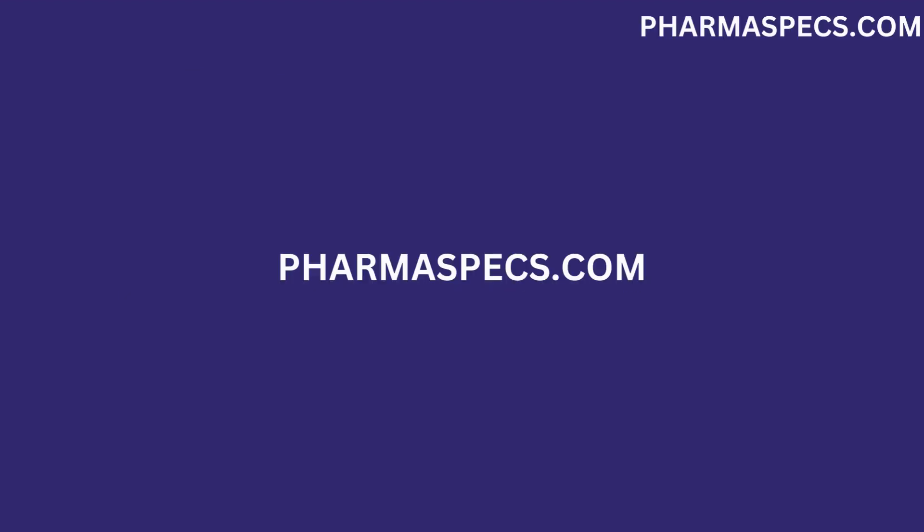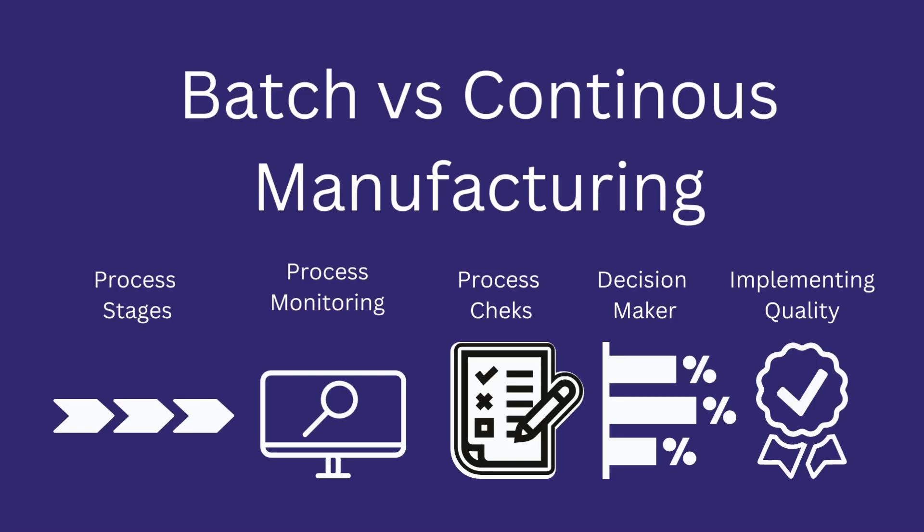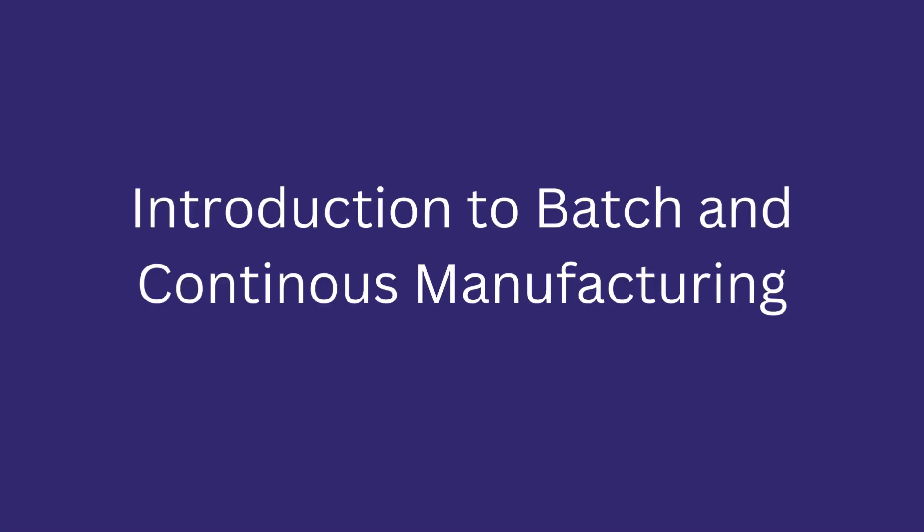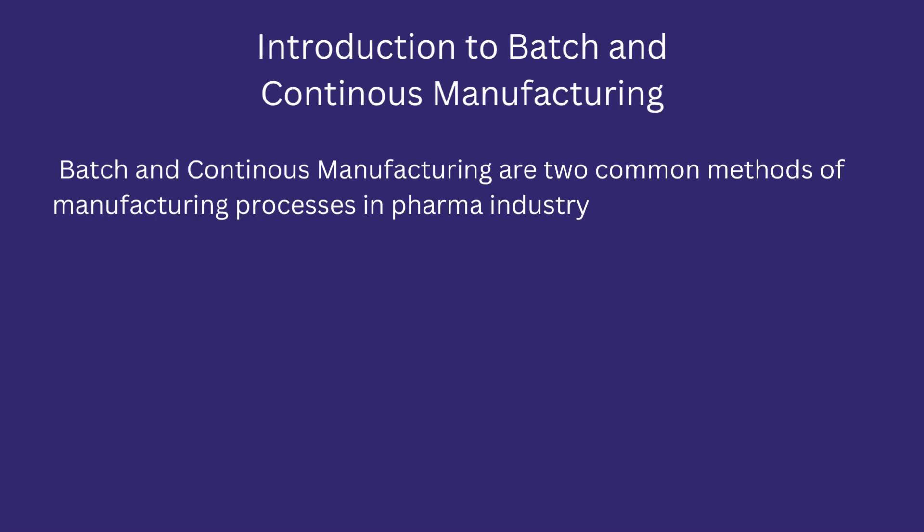Hi guys, welcome to my channel. In this video, we will discuss batch versus continuous manufacturing. Batch and continuous manufacturing are two common methods of manufacturing processes in the pharma industry. They both represent how raw material advances to different stages, how process parameters are monitored, and how quality principles are applied to a product.